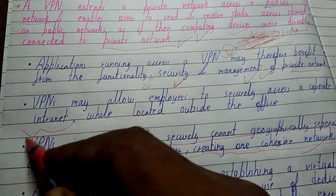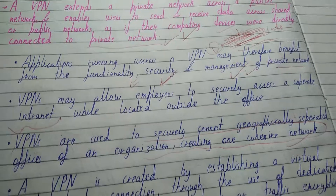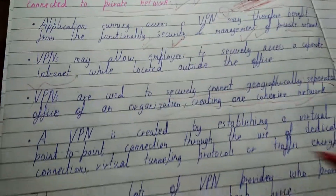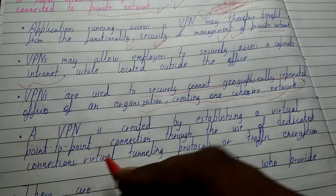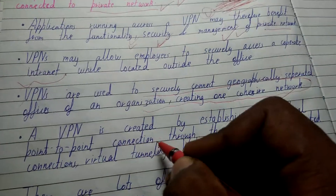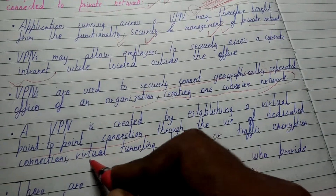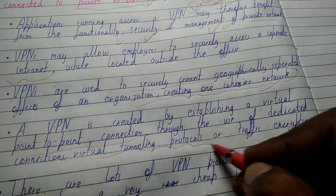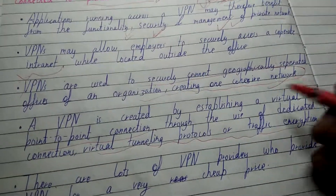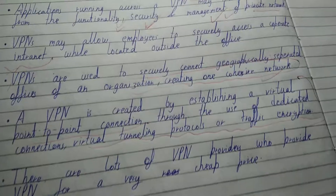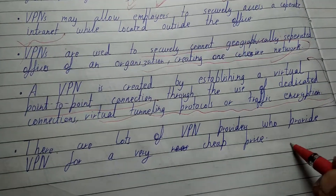A VPN is created by establishing a virtual point-to-point connection through the use of dedicated connections, virtual tunneling protocols, or traffic encryption. You can use this as a definition of VPN. There are a lot of VPN providers who offer VPN services at a very cheap price compared to private and public networks, which is why VPN is gaining so much popularity nowadays.